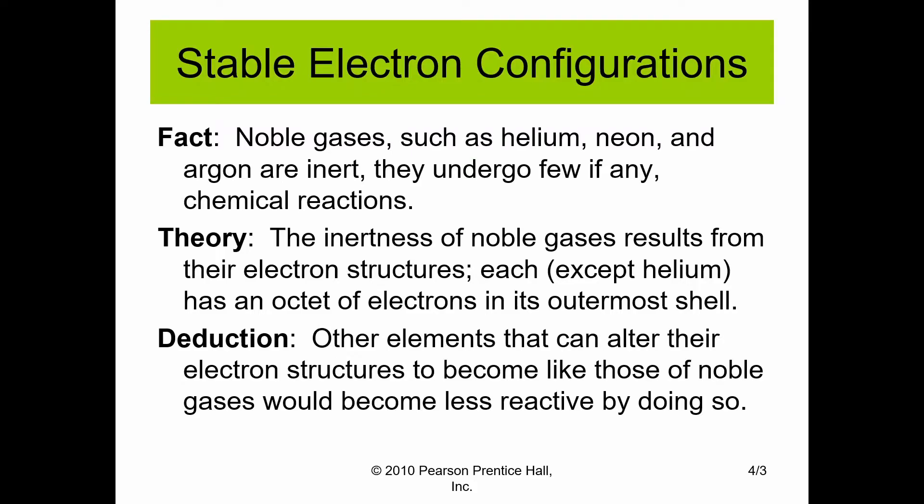Before we go into the individual structures and the chemistry behind each of these bonds, let's look at some background information. The noble gases, or the gases that are in group 8 on the periodic table, such as helium, neon, and argon, are inert. They undergo very few, if any, chemical reactions. These gases are considered to be very stable, or we can consider their electrons to be very happy.